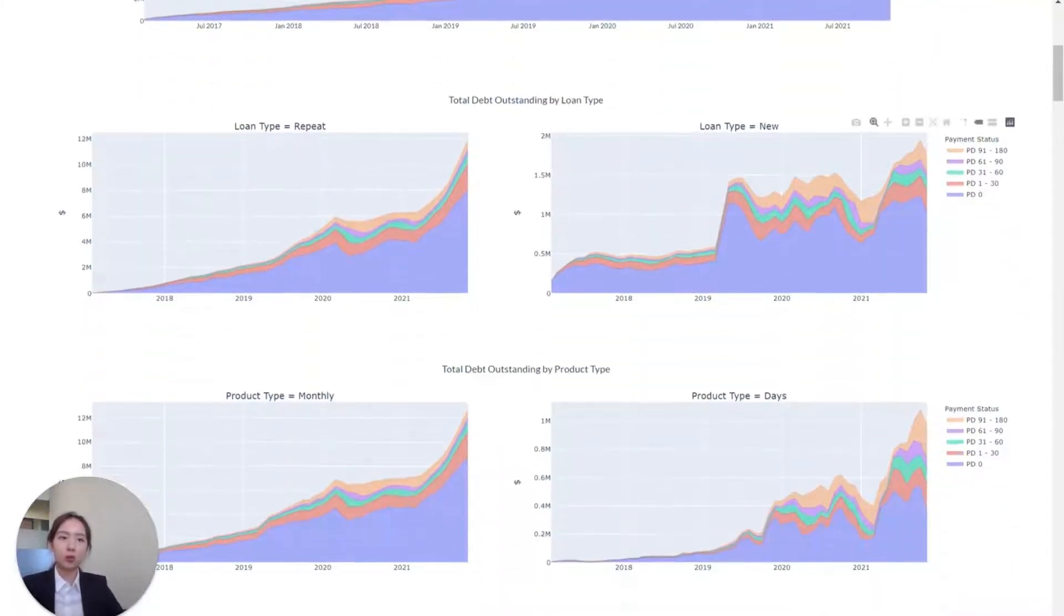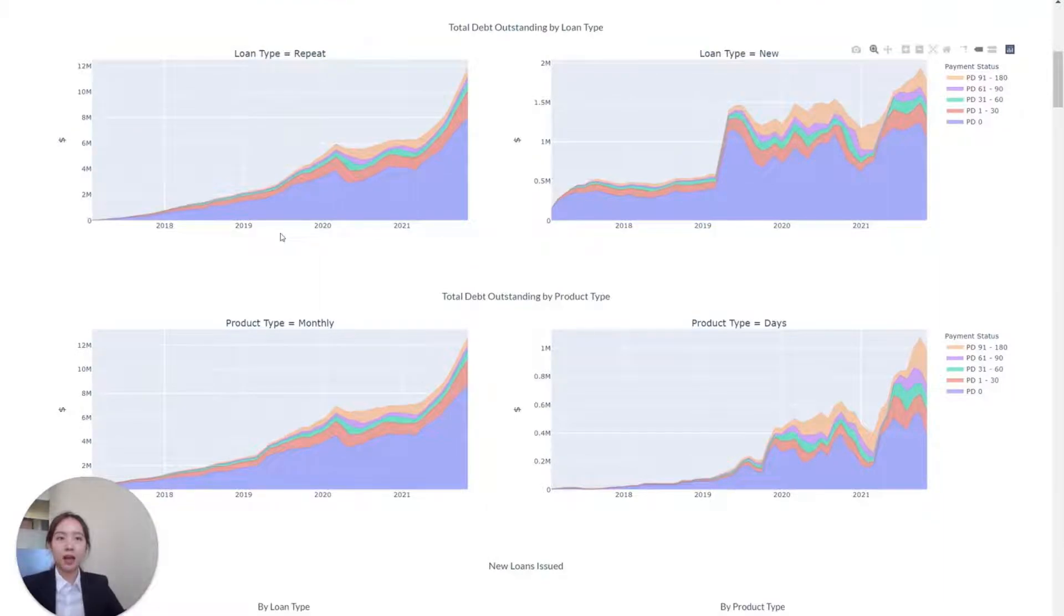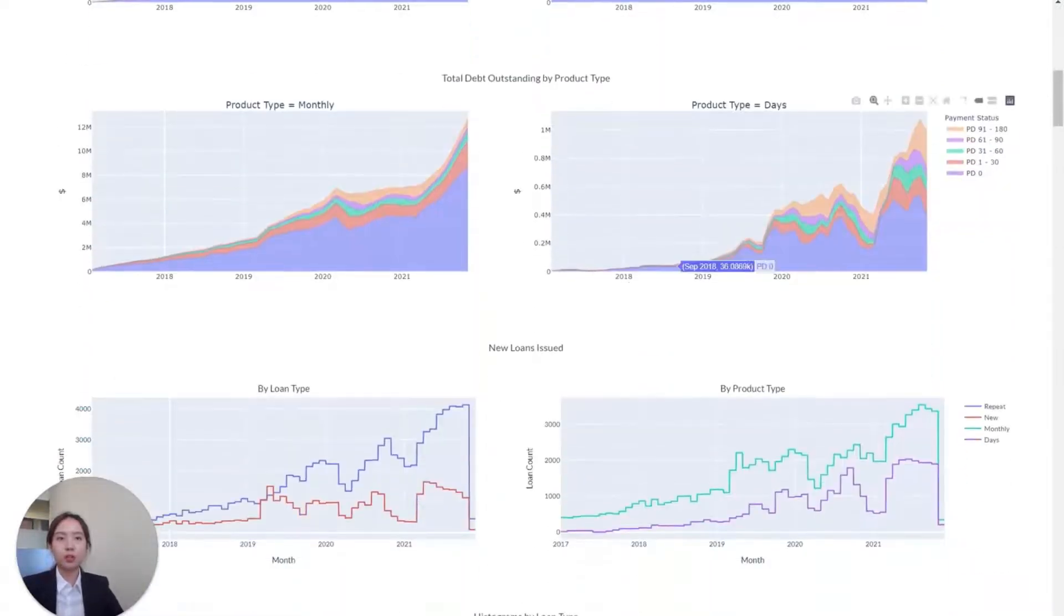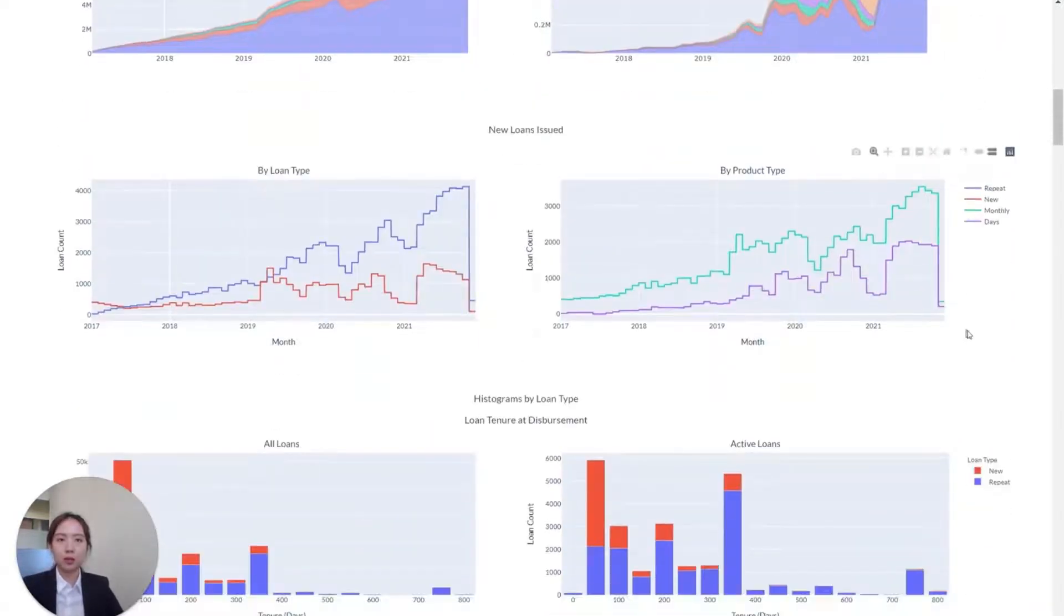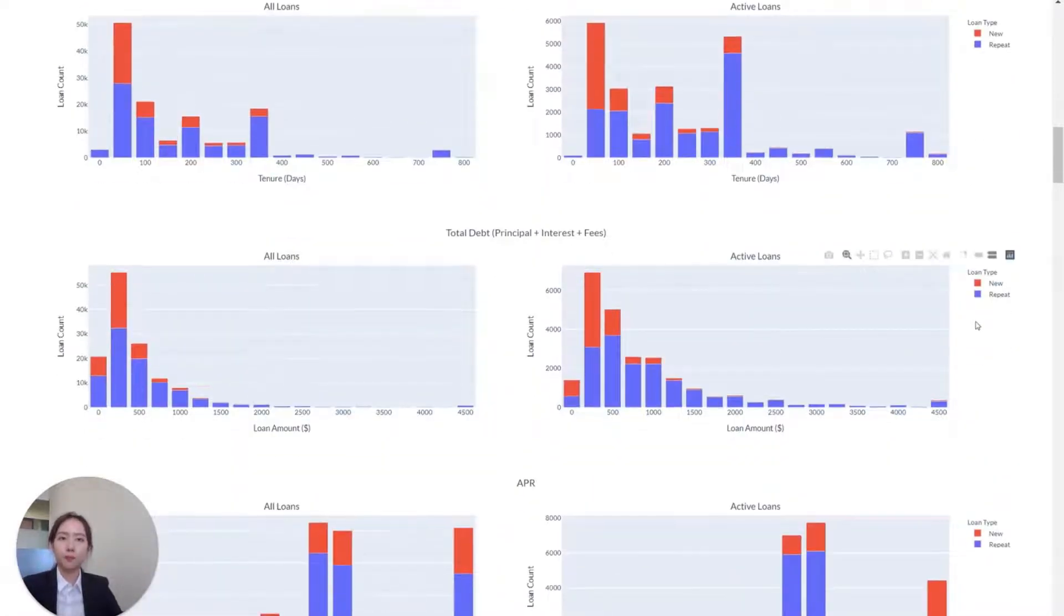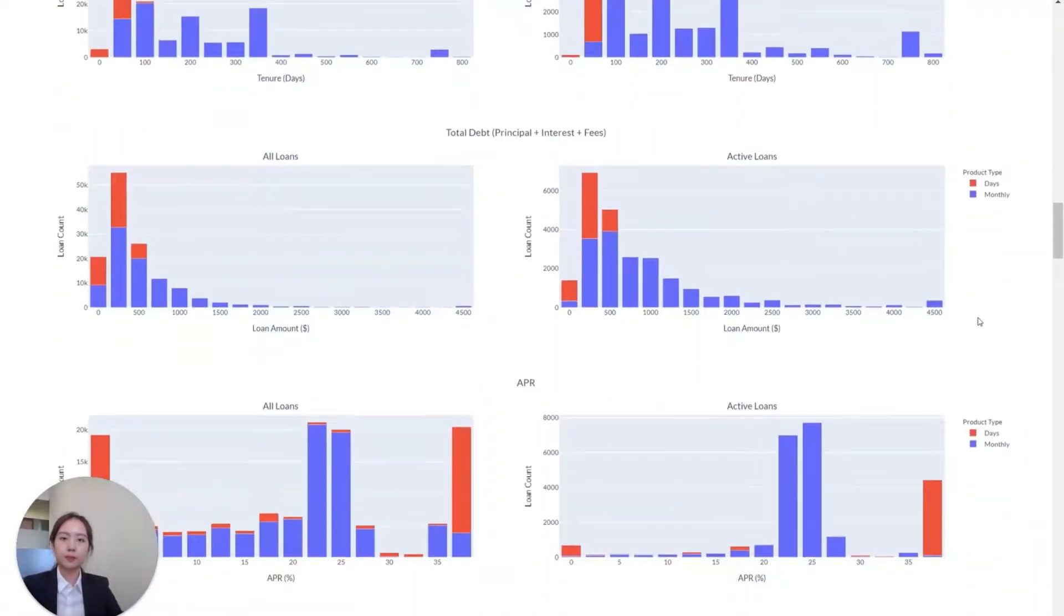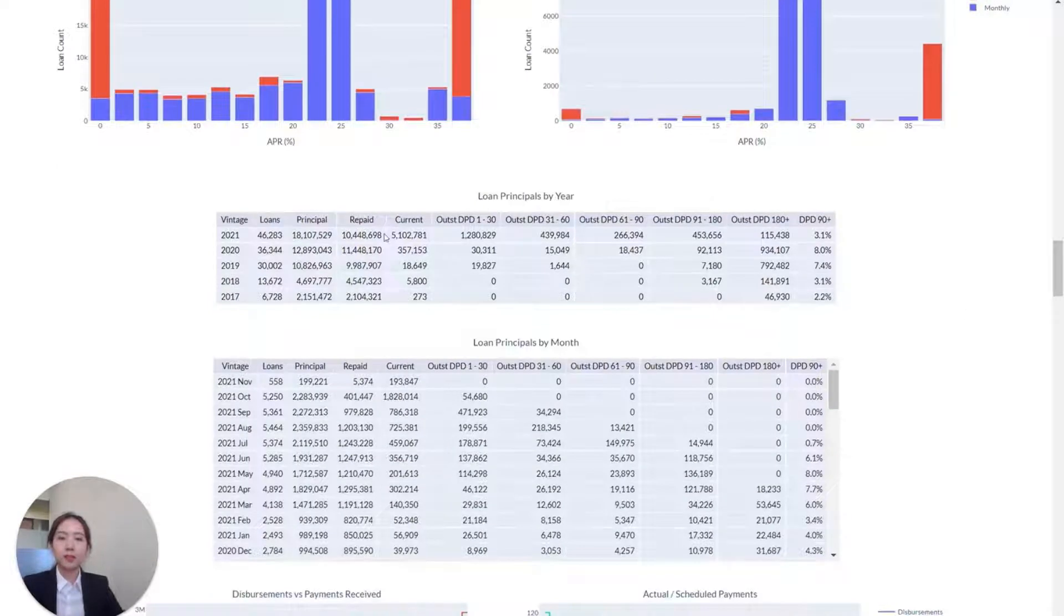We get the distribution and time series progression of the loan tenure, APR, and disbursement. And this is the DPD table by vintage.